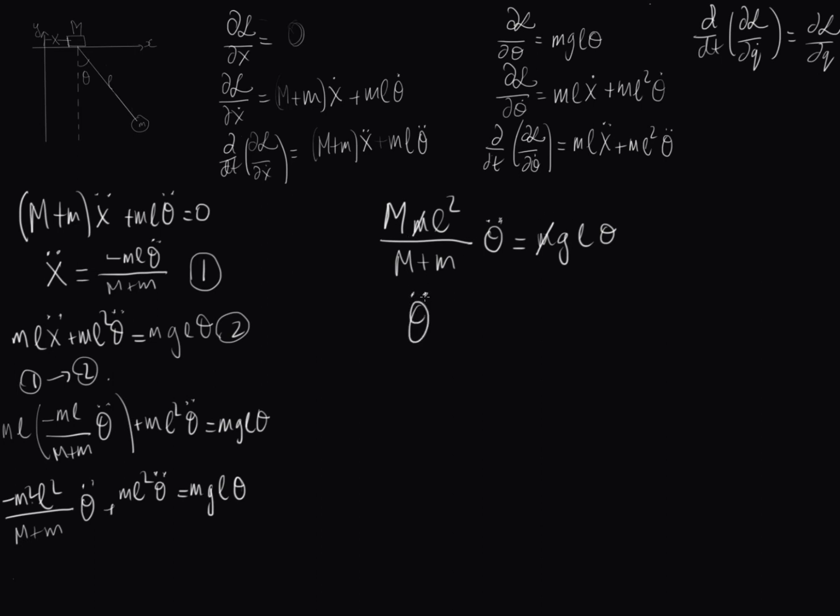So now these little m's cancel out, and if I rearrange it, then I end up with theta double dot is equal to G, these L's also cancel, outside of big M plus little m divided by big M L times by theta. So this is the equation of motion under the small angle approximation for this pendulum.